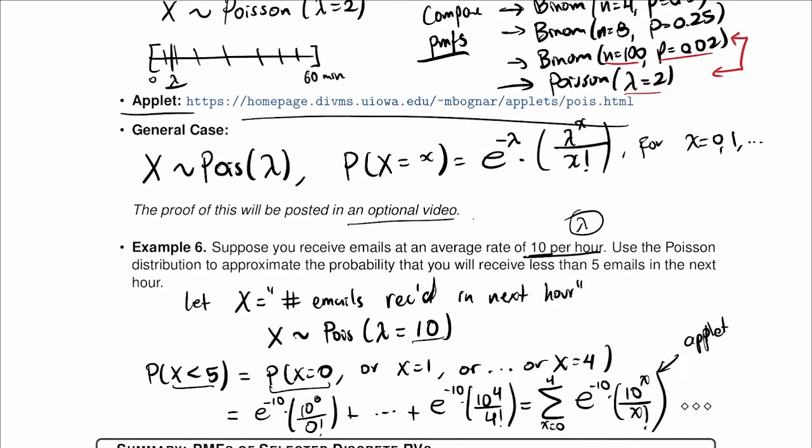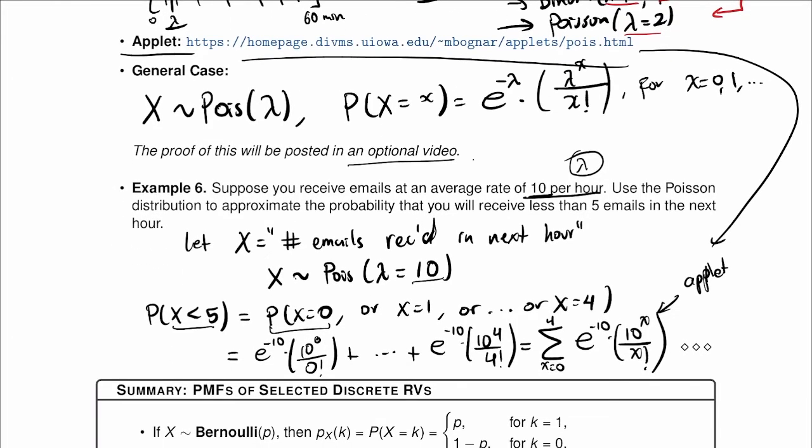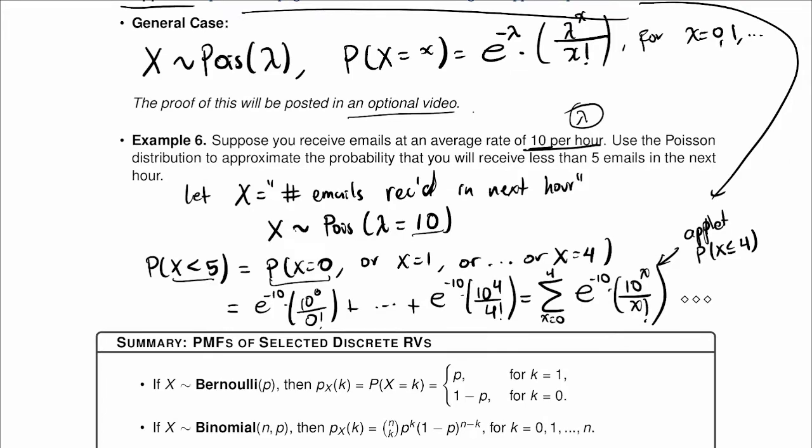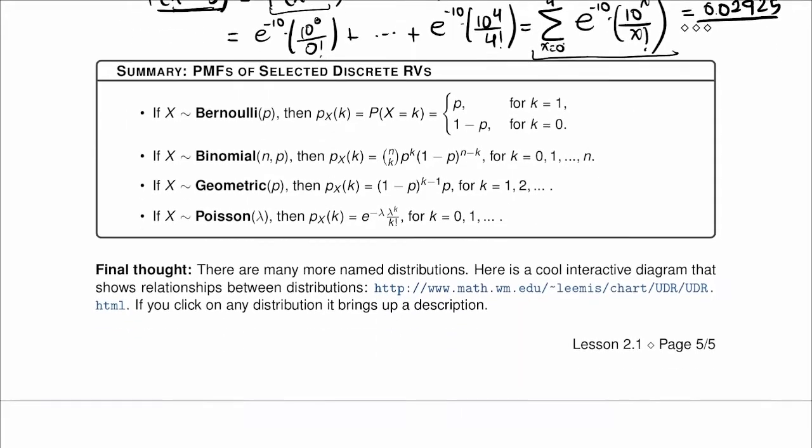You can use the applet, remember this one, use it here, but calculating the probability of x less than or equal to 4, right? It's the same as less than 5. And if you use that or this calculation here, you will find that the probability is 0.02925.